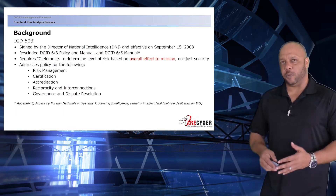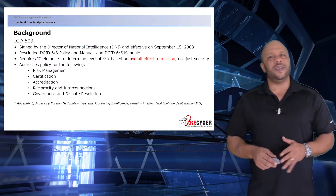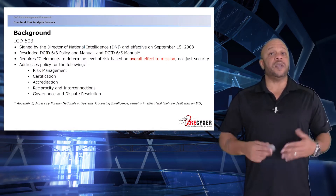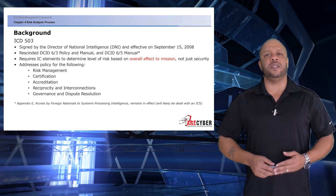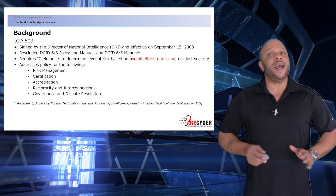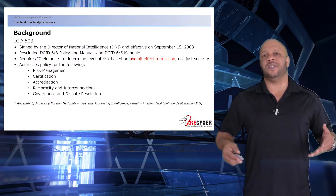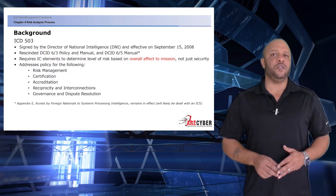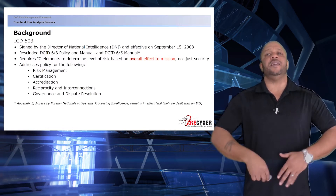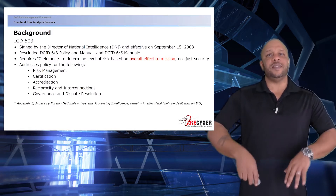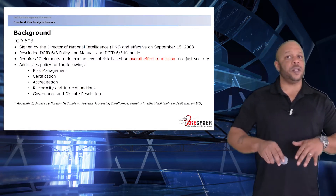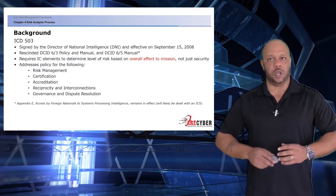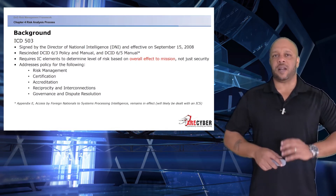As we start to look at the risk management processes, it starts with a little background. Starting with the ICD-503, signed by the Director of National Intelligence and effective as of September 15, 2008. It rescinded the DCID-6-3 policy and manual and the DCID-6-5 manual. It also requires intelligence community elements to determine the level of risk based on the overall effect to the mission, not just the checklist.